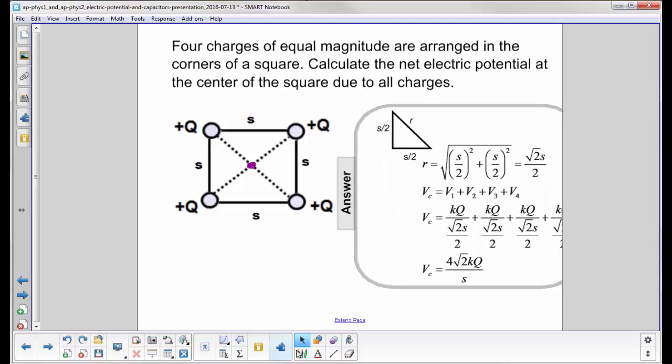So the first thing we're going to do is find out how far away this point is from any one of these charges, because if you'll note, the distance is the same. So if we were to draw a triangle like this, okay, note that each side of this right triangle is S over 2, S over 2 here also.